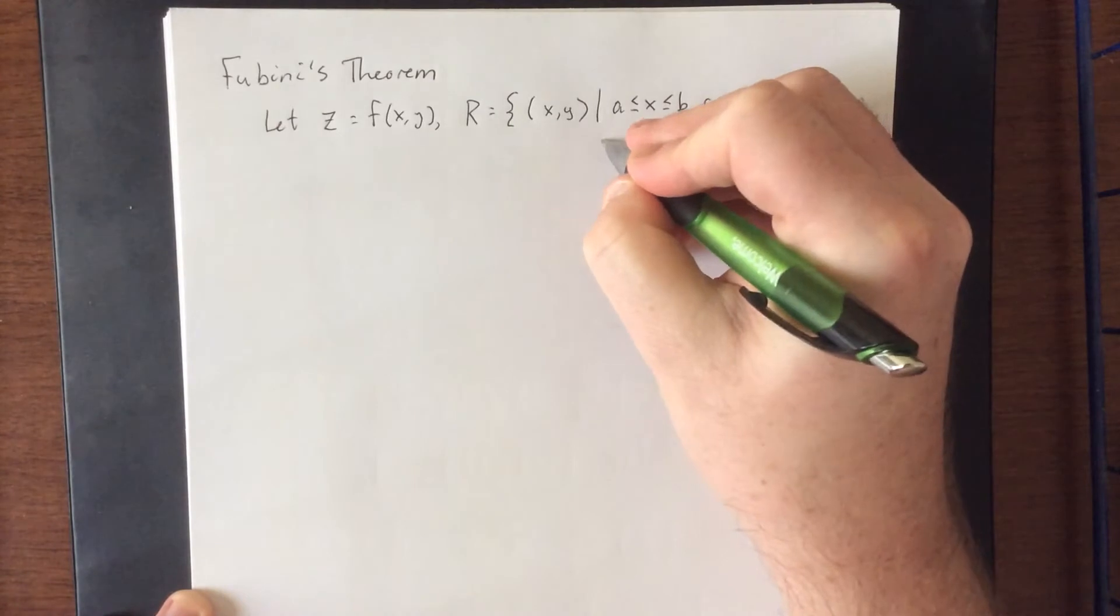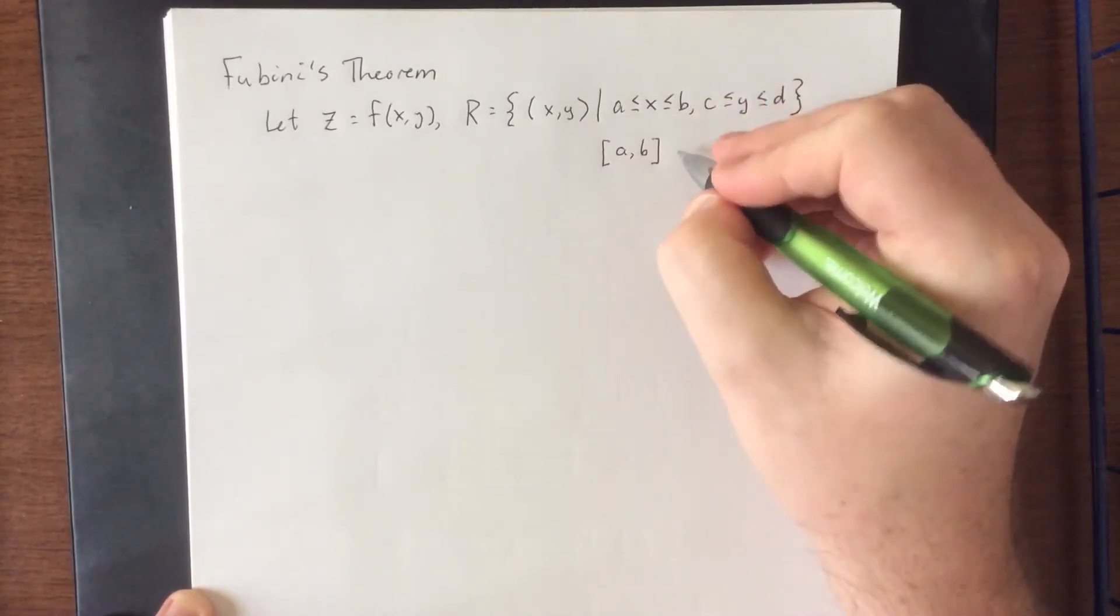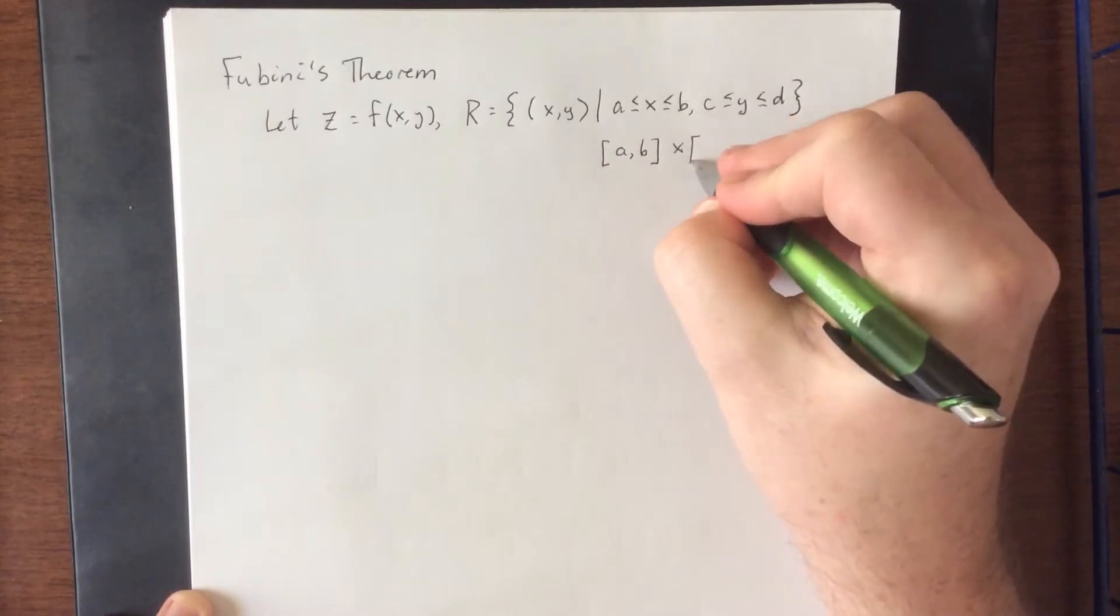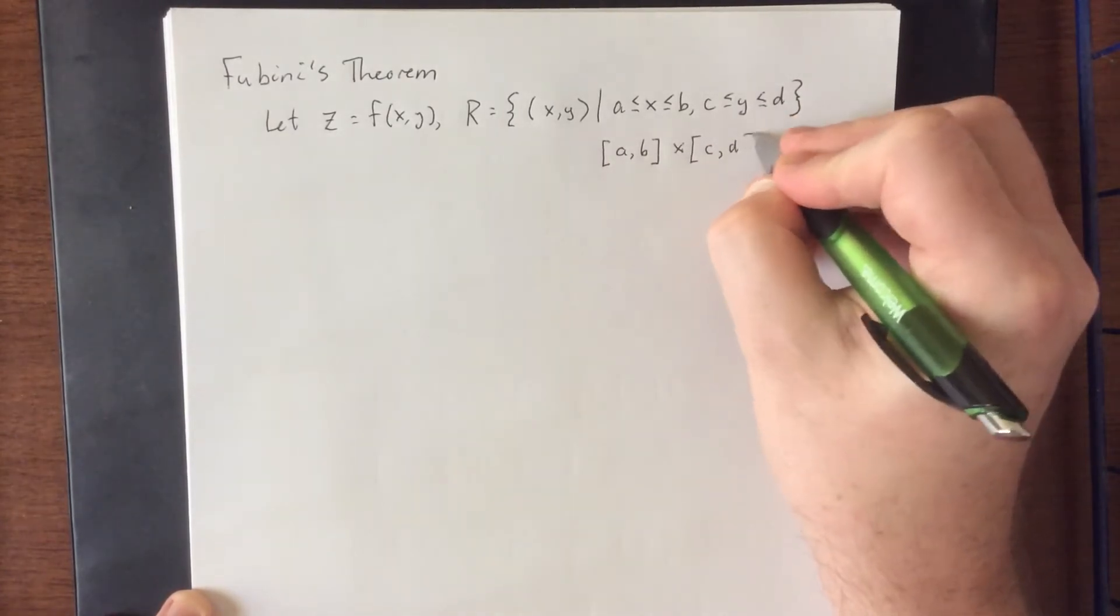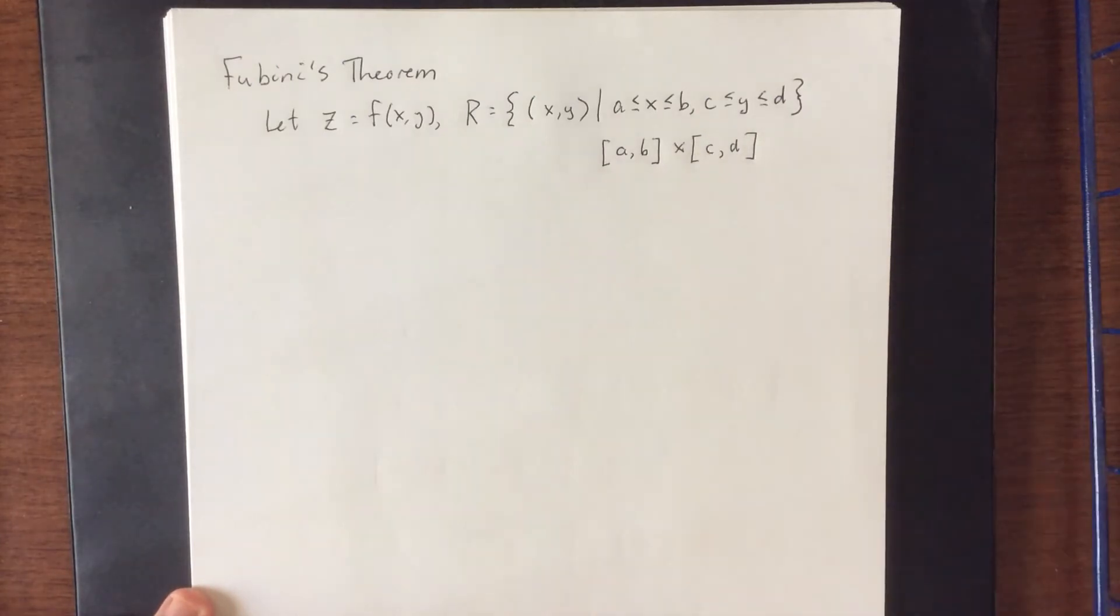There is technically a slightly shorter way of representing this, which is the closed interval from a to b and the Cartesian product of that interval with the interval from c to d. So both of these representations mean the same thing.